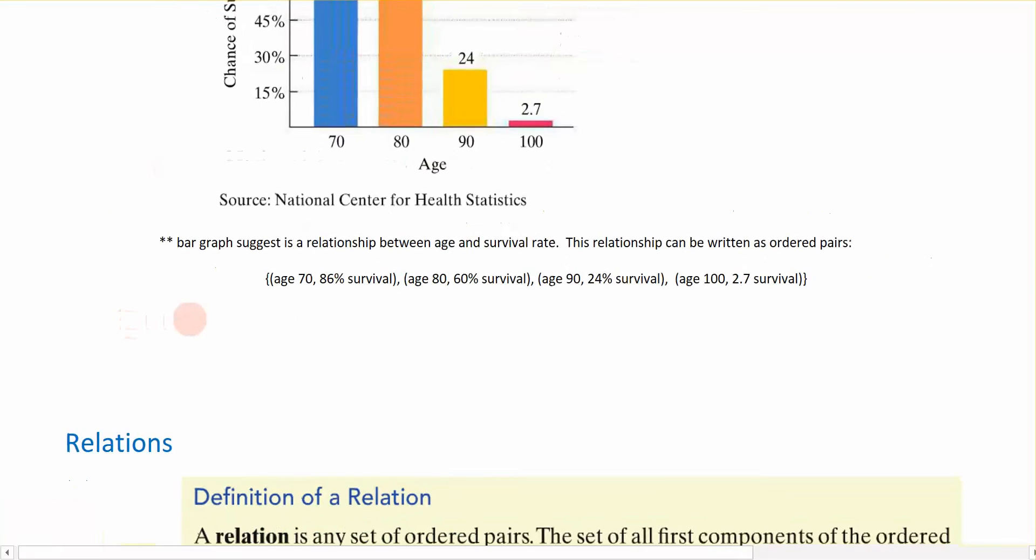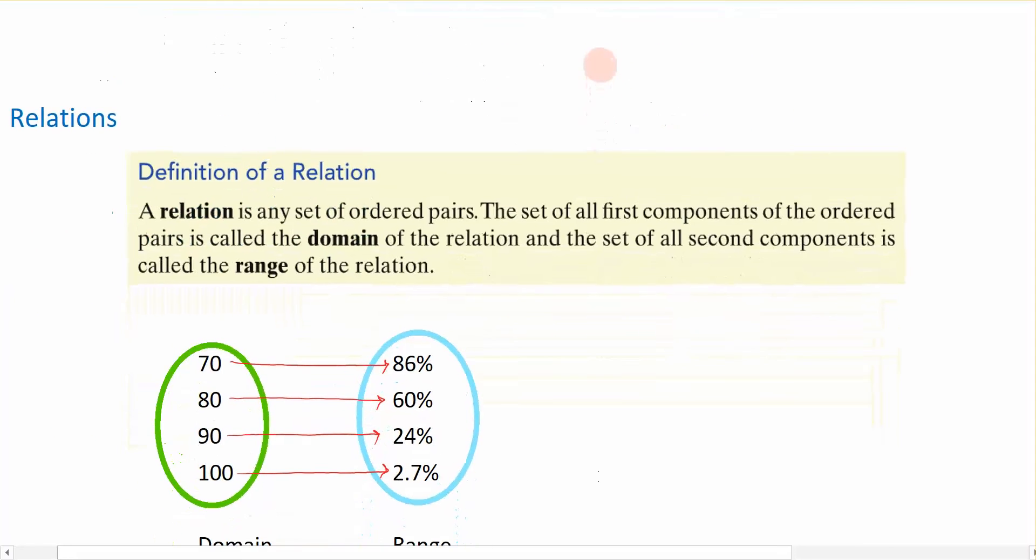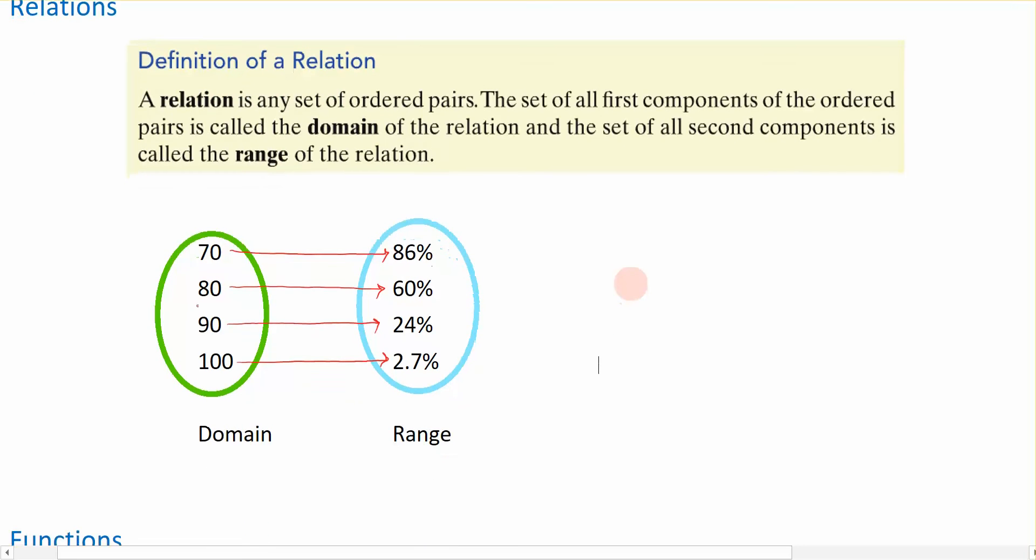Now formally, the definition of a relationship is given here. It's a set of ordered pairs where the first component of the ordered pair is the domain and the second is called the range. This is just rewriting the ordered pairs that we had given above, where the leftmost circle over here is depicting the domain and the rightmost circle is the range. And you can see that my value, my age of 70, corresponds with the survival rate of 86%.